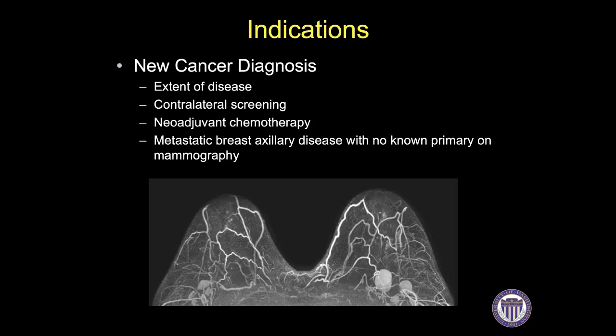In women with metastatic breast axillary disease with negative mammographic findings, breast MRI can identify the primary cancer in about two-thirds of cases. In this case, the patient had biopsy-proven metastatic disease to an axillary lymph node on her left side. Her mammogram was negative, and her MRI showed a mass in the anterior breast, which was her primary breast cancer.